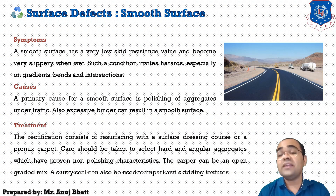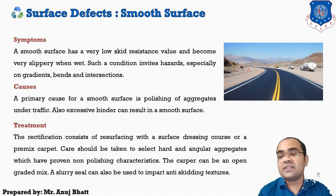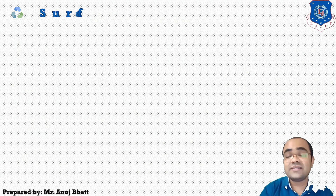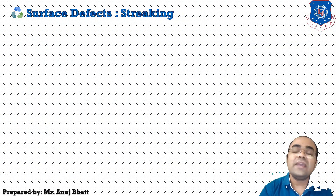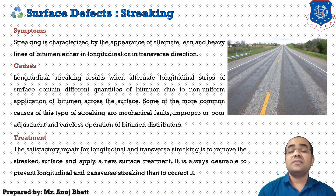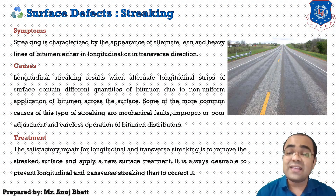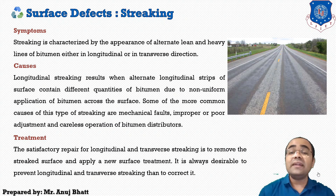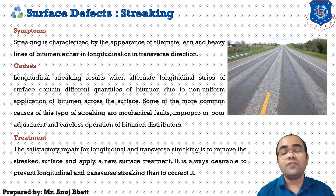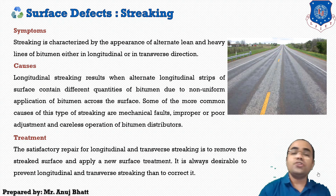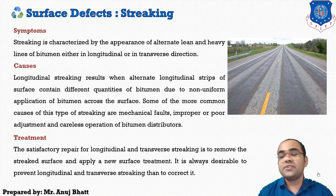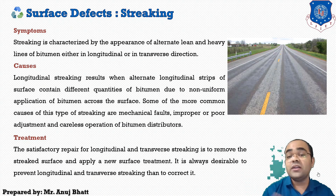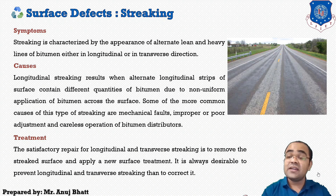This is how we can treat the smooth surface to provide skid-resistant properties. The next defect is streaking. For streaking, the symptom is that it is characterized by the appearance of alternate lean and heavy lines of bitumen, either in the longitudinal direction or in the transverse direction. In the figure, you can observe lean or heavy lines that are different from the existing pavement structure.